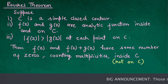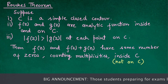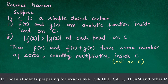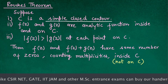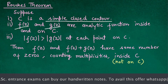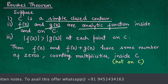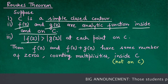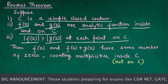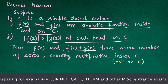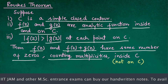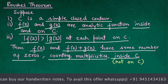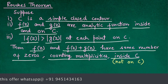Welcome to the channel. Today we will see Rouché's theorem. Rouché's theorem tells us that if we have some simple closed contour C and two functions f(z) and g(z) that are analytic inside and on C, and if the modulus of f(z) is always greater than the modulus of g(z) at each point on C, then f(z) and f(z) plus g(z) have the same number of zeros, counting multiplicities, inside C — not on C.